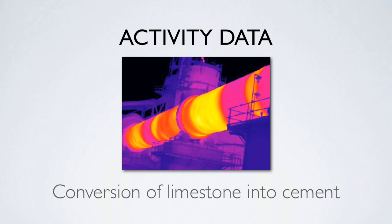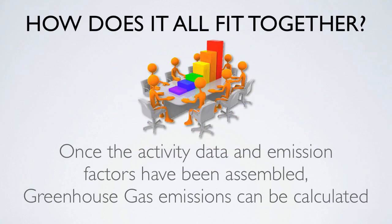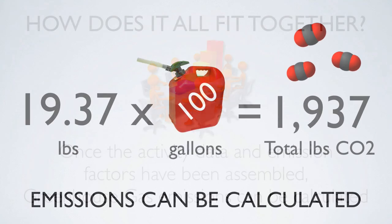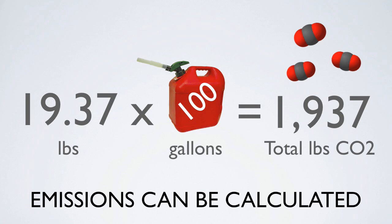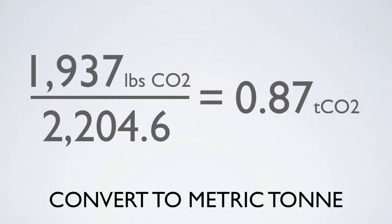Once the activity data and emission factors have been assembled, greenhouse gas emissions can be calculated. For example, let's assume that a company consumed 100 gallons of gasoline last year. We know that the emission factor for gasoline is 19.37 pounds of CO2 per gallon. In this case, the activity data is the number of gallons consumed, and the emission rate of 19.37 pounds of CO2 per gallon is the emission factor. So, 100 gallons of gasoline times 19.37 pounds per gallon would result in 1,937 pounds of CO2 emissions. Next, to convert to a metric ton, simply divide by 2,204.6 to arrive at 0.87 metric tons of CO2.